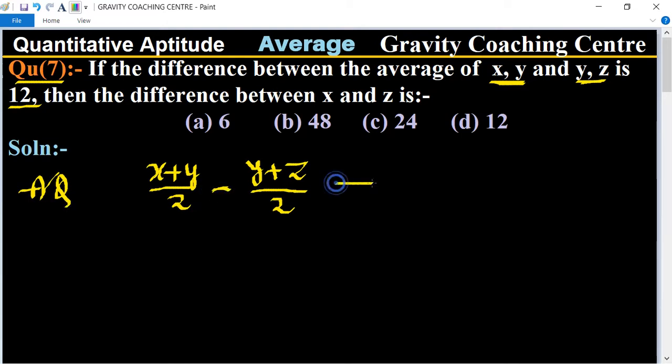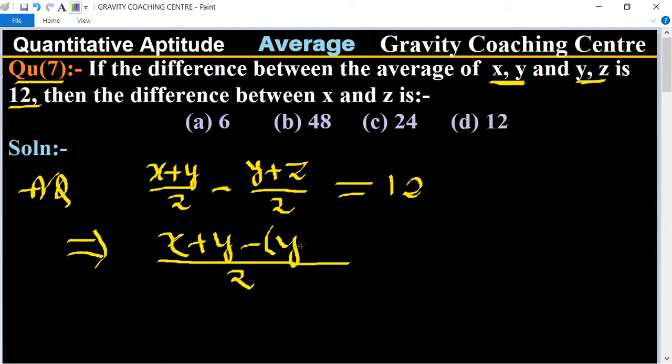So now we take the LCM. This LCM is 2. So x plus y minus y plus z equal to 12.